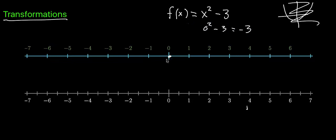So we want to watch zero move to negative three. Similarly, if you plug in one, you'd get one squared minus three, which is negative two. So we want to watch one move to negative two.